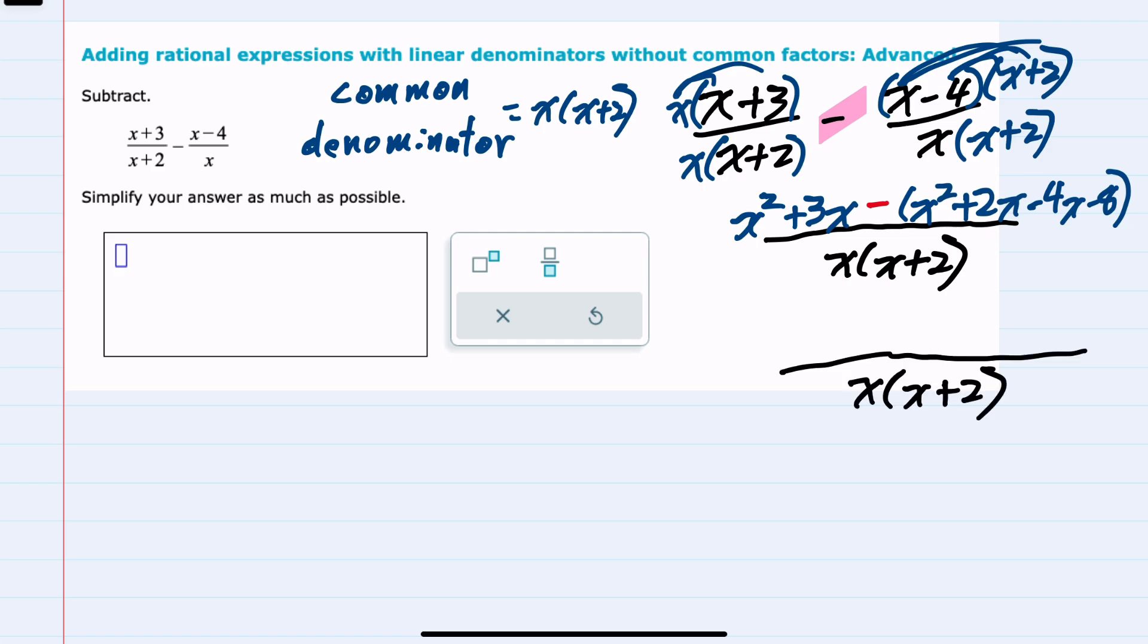We can simplify the numerator quite a bit. I'll start by distributing that negative to get rid of those parentheses. Negative times x squared, negative x squared, negative times a 2x, minus 2x, negative times a minus 4x, a positive 4x, and negative times a negative 8, a positive 8.